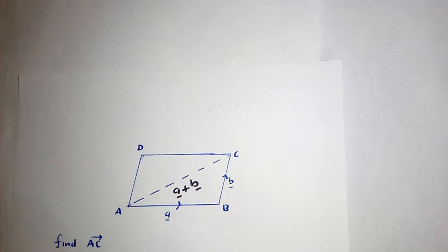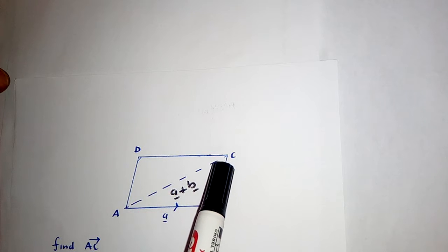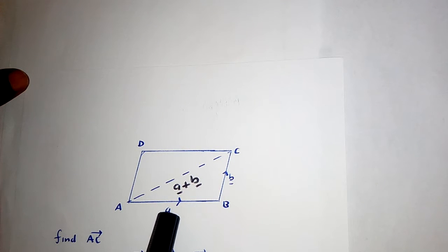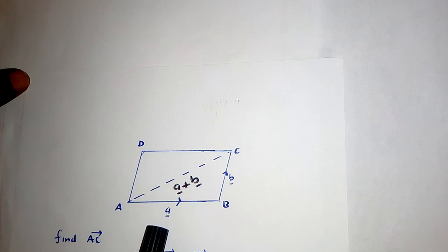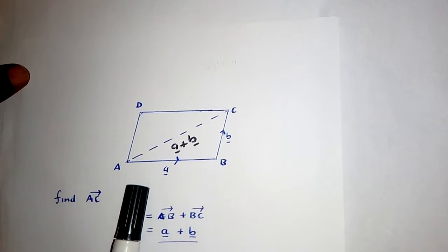Here they have said find vector AC. It's very important to understand the direction of the vector — where is the vector going to and where is it coming from? In this case, the vector they're asking us to find, vector AC, is coming from A and it's going to C. When you've been given the diagram, you check the arrows — where are the arrows pointing.